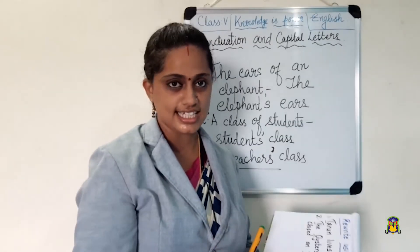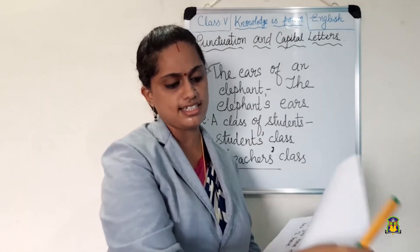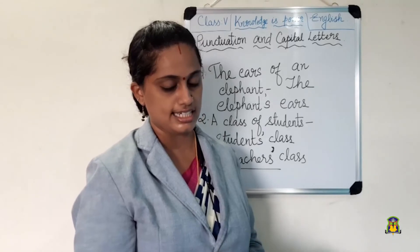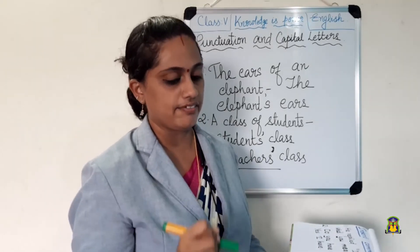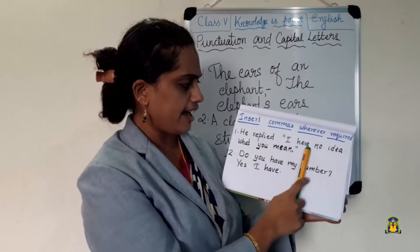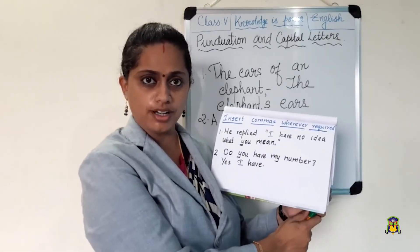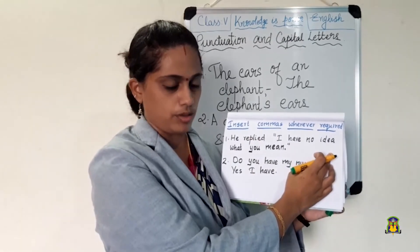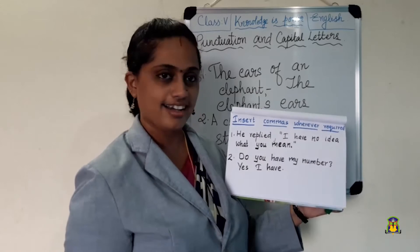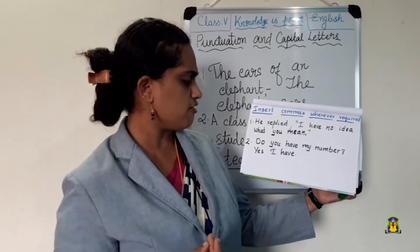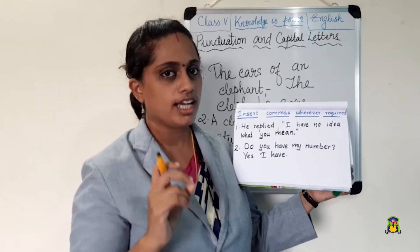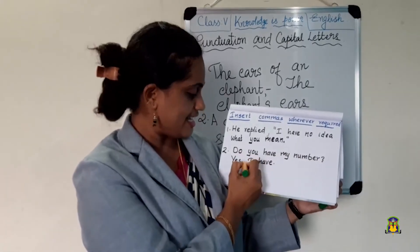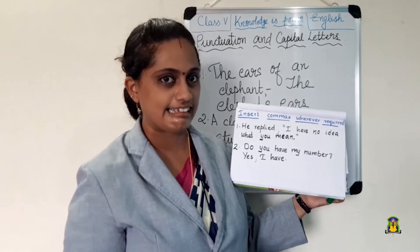Now the next exercise: insert commas wherever required. That is exercise B in page number 11. First question: 'He replied, I have no idea what you mean.' When we are putting something in inverted commas, it should be separated with a comma. Second question: 'Do you have my number? Yes, I have.' Remember when we studied about commas — with the expressions 'yes' and 'no,' we separate with a comma. 'Yes, comma, I have.' That is the usage of comma.